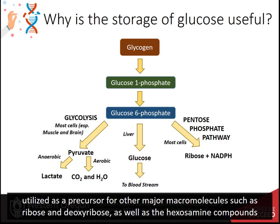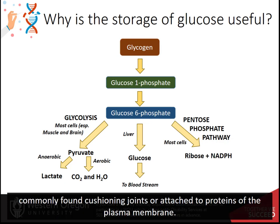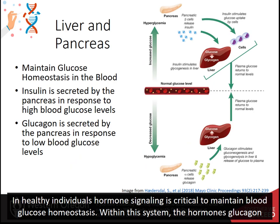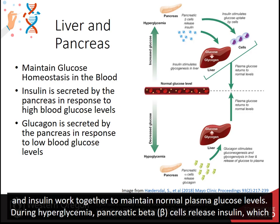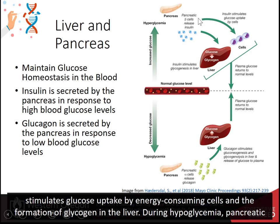Glucose-6-phosphate can also be utilized as a precursor for other major macromolecules, such as ribose and deoxyribose, as well as the hexosamine compounds commonly found cushioning joints or attached to proteins in the plasma membrane. In healthy individuals, hormone signaling is critical to maintain blood glucose homeostasis. The hormones glucagon and insulin work together to maintain normal plasma glucose levels. During hyperglycemia, pancreatic beta cells release insulin, which stimulates glucose uptake by energy consuming cells and the formation of glycogen in the liver.